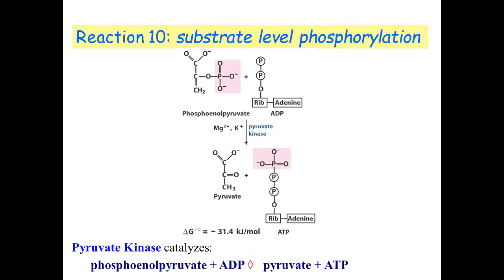This molecule is called phosphoenol pyruvate, and the enzyme is pyruvate kinase. Pyruvate kinase catalyzes the transfer of phosphate from phosphoenol pyruvate. With this reaction, ATP is produced — the phosphate is taken and ATP is made, forming pyruvate.